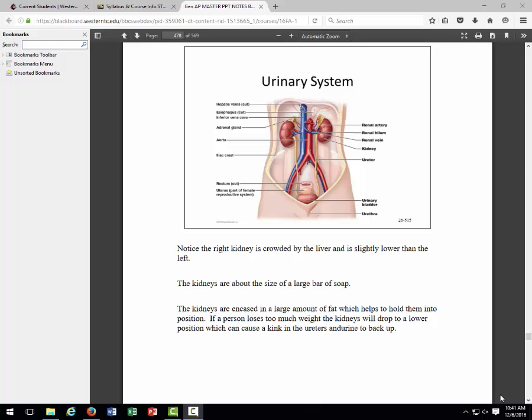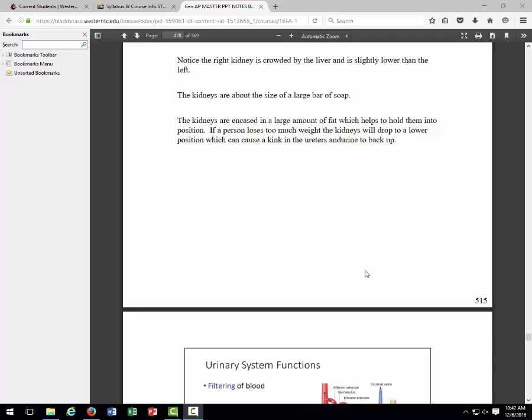They're about the size of a large bar of soap, so they're not really very big. About the size of your palm, a little bigger maybe. But they have a lot of fat around them, and that holds them up and holds them in place. So if a person loses a lot of weight, they can get rid of that fat around the kidney, and the kidneys can actually kind of droop and cause the ureter to kink. So people that are very thin are at risk for that problem. We need a little bit of fat around them just to keep them in place.